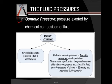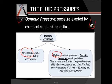Osmotic pressure is of two types: crystalloid and colloidal. If we take a fluid, it has some molecules that are crystallized molecules such as sugars, magnesium, fluoride, and all those things. Then we also have some protein molecules in that fluid.